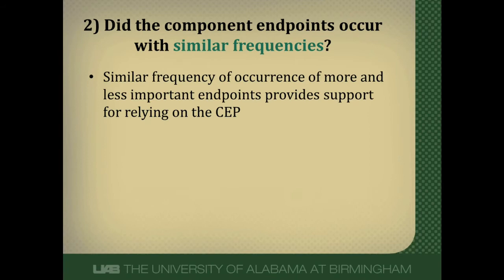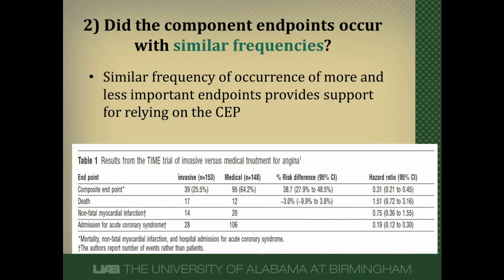If it's a good composite, each component should occur with similar frequency. This tells you the intervention is affecting them similarly and that there's similar underlying biology. Looking at the TIME trial data, in the medical arm there's a large gradient of outcome events — fairly few deaths, but lots of admissions for acute coronary syndrome. In the invasive arm it's not as extreme, but there's still roughly double the admissions for acute coronary syndrome compared to deaths. I'd like to see these numbers tighter. This gets a so-so for me, but we should probably reject it and look at each individual component.